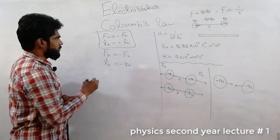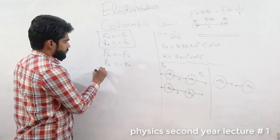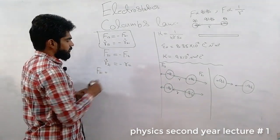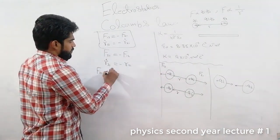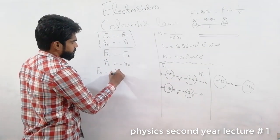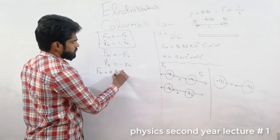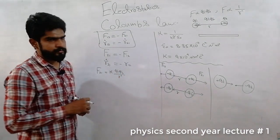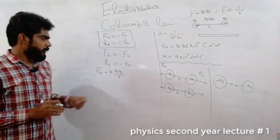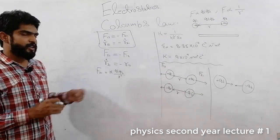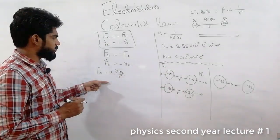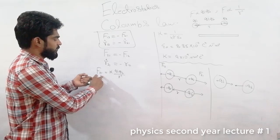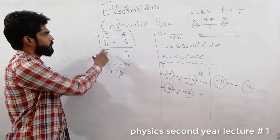For F21 in full form: F21 = k q1 q2 over r square, and for the direction we use the unit vector r-hat in the direction of F21.